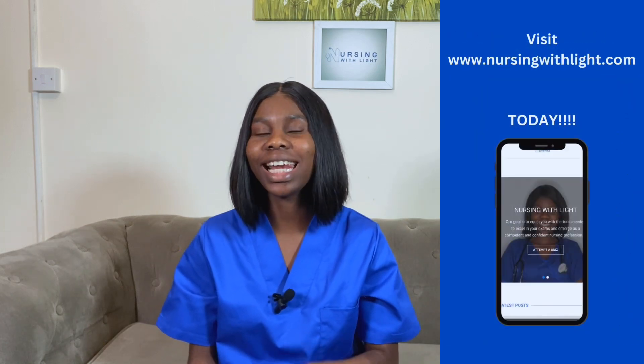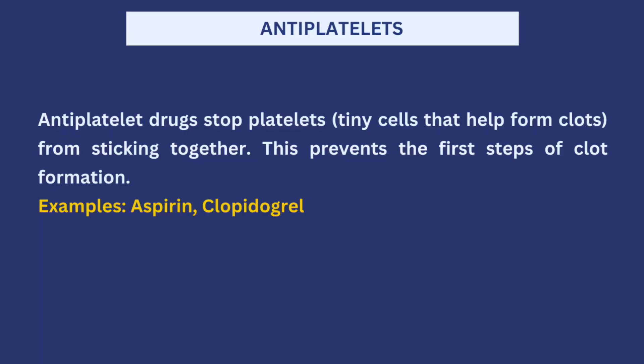Finally, we have anti-platelet drugs. Anti-platelet drugs stop the platelets from sticking together, which prevents the first step of the blood clot formation process. A very common example is clopidogrel and aspirin. Aspirin fits into different classifications of drugs because it has many functions, but it can still be considered an anti-platelet drug.